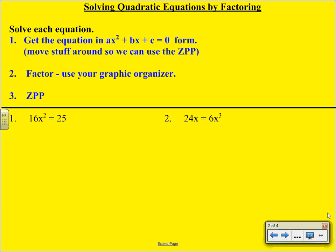Number one: we have 16x² = 25. Our first step is to get this equal to zero. We're going to keep the term with the biggest exponent positive, so we'll keep that on the left and subtract 25 on both sides. Please do not combine these and say -9x². These are not like terms. We have 16x² - 25 = 0.